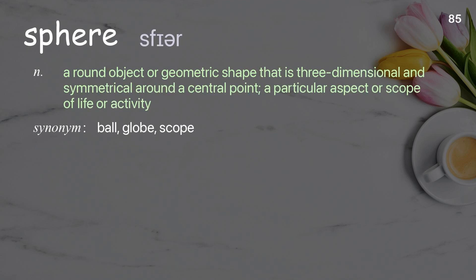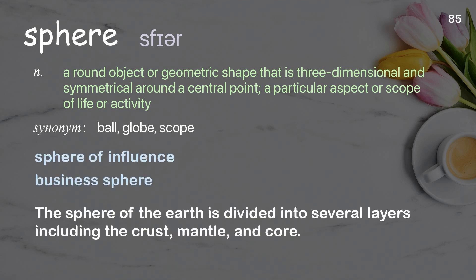Sphere: A round object or geometric shape that is three-dimensional and symmetrical around a central point; a particular aspect or scope of life or activity. Examples: sphere of influence, business sphere. The sphere of the earth is divided into several layers, including the crust, mantle, and core.